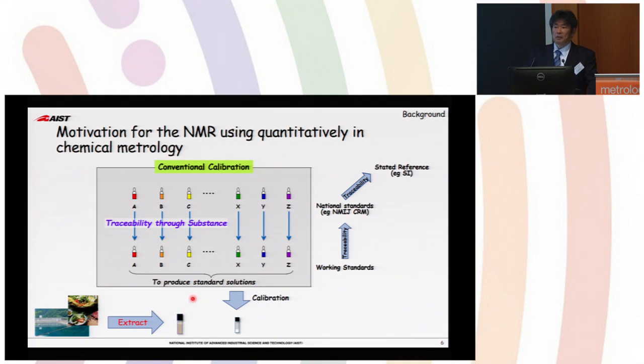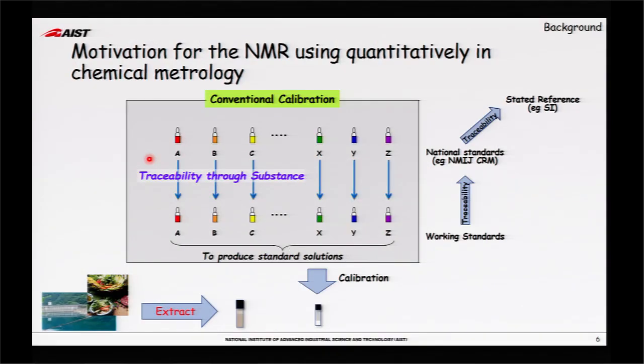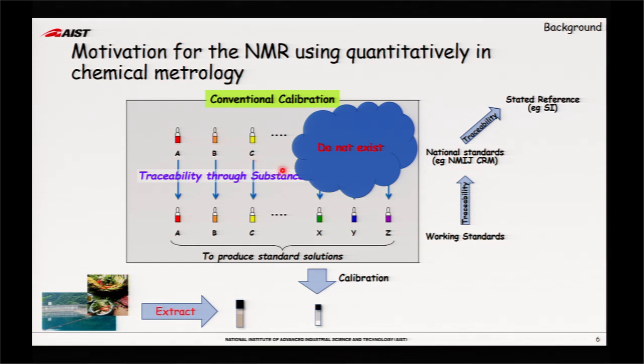But we really want to have some kind of system that breaks the conventional calibration system. In chemistry, if you want to calibrate one material, you need higher reference of the same material. And if you have regulation, you have to set some kind of reference, then many references are necessary. However, unfortunately, we cannot set all the reference by making just CRM production at the national level. So we want to have some kind of system that can be transferred one molecule to the other molecule in a quantitative SI traceable manner.